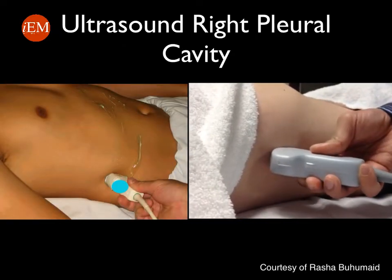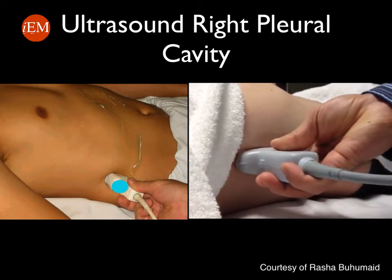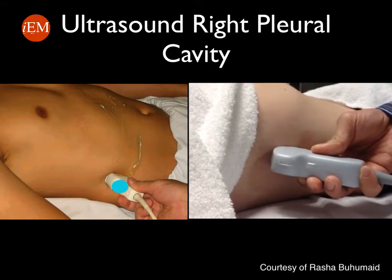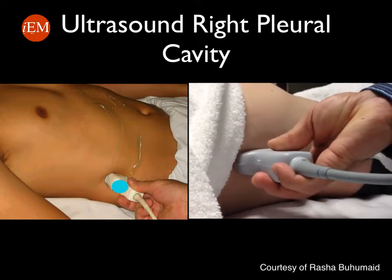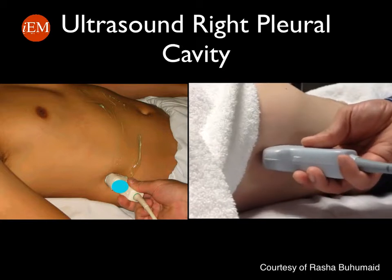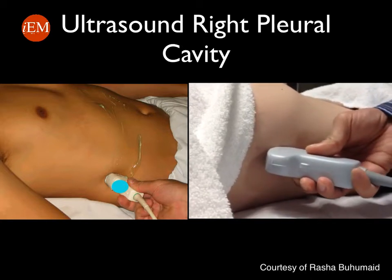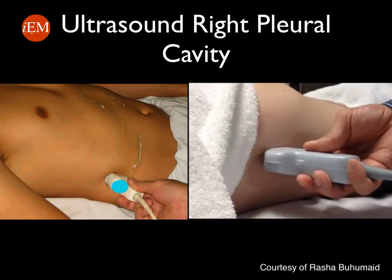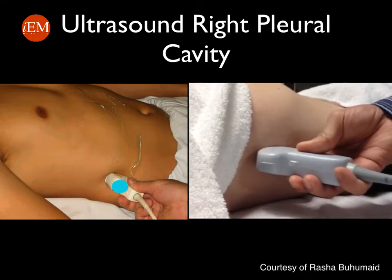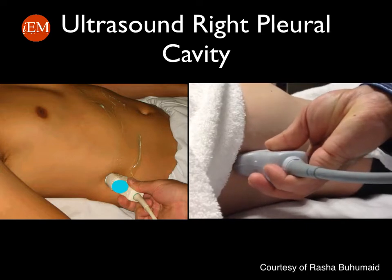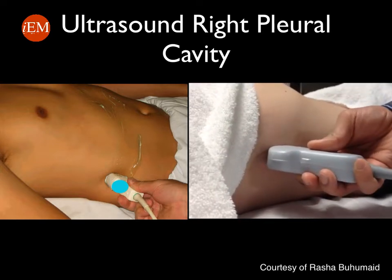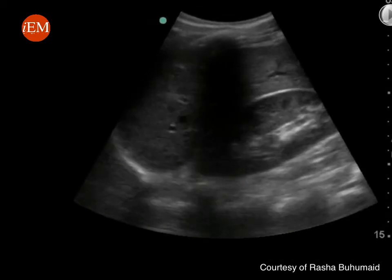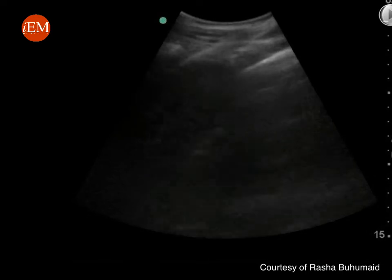To evaluate the right pleural cavity for pleural effusion, you will place the probe in a coronal position, very similar to the position used for the FAST exam, in the anterior or mid axillary line with the probe marker towards the patient's head. You will need to move more cephalad and evaluate the area just above the diaphragm.